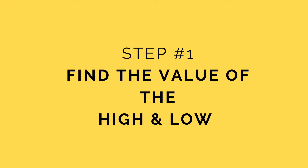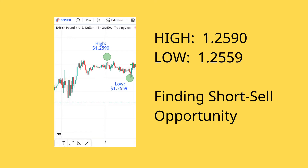Step number one: find the value of the high and low. Let's use the British Pound example. High: 1.2590. Low: 1.2559.